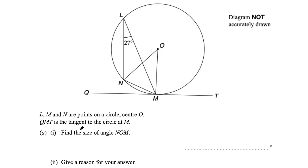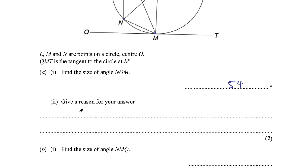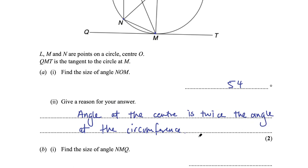Question 6 shows points L, M, N on a circle with centre O, and QMT is a tangent at M. Part A1 asks for angle NOM. Using the angle at the centre theorem — the angle at the centre is double the angle at the circumference — twice 27 is 54 degrees. The reason is: angle at the centre is twice the angle at the circumference.